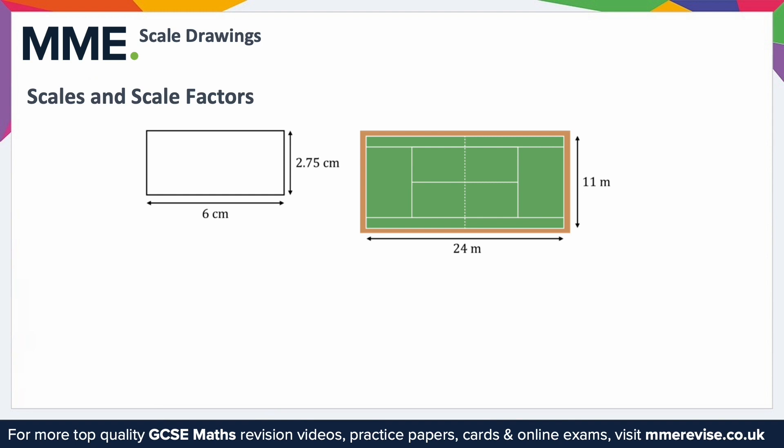Here we can see a tennis court and a scale drawing of the same tennis court. If we want to find the scale this scale drawing was drawn at, all we need to do is find some equivalent lengths. You can see that this 6cm is meant to be equivalent to this 24m, because they're both representing the length of the court.